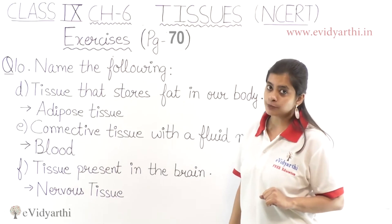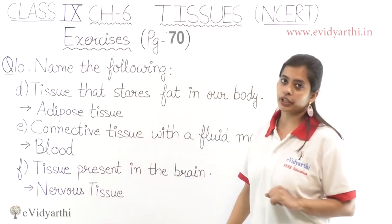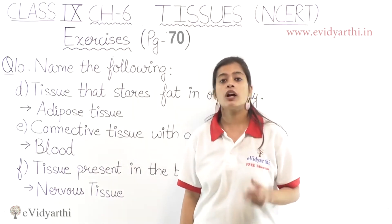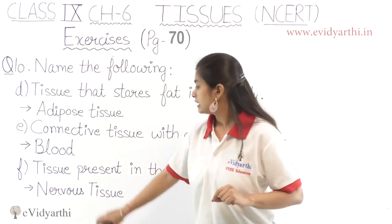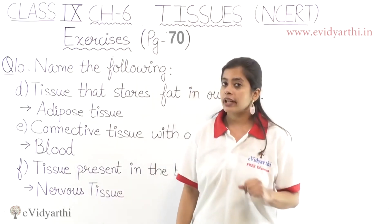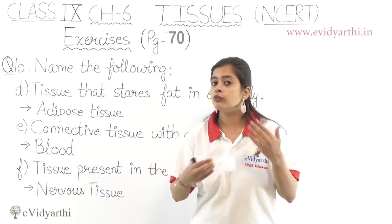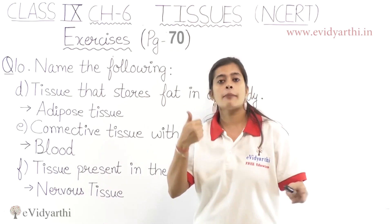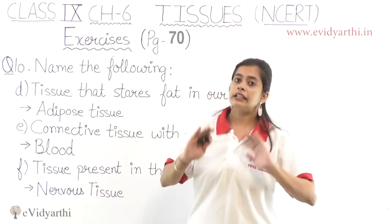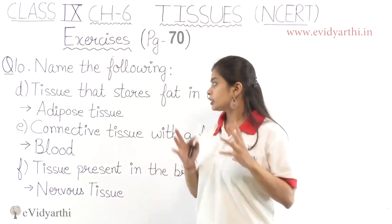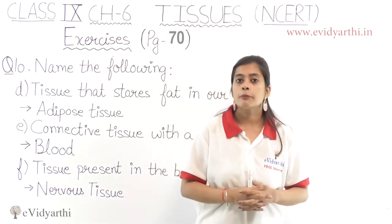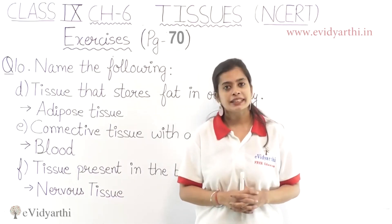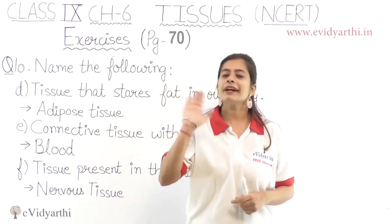Now moving on to the last part: which tissue is present in the brain? That is very simple — nervous tissue. Nervous tissue plus muscular tissue: these nerve impulses combine and carry messages through our body. So this is all about tissues. Stay tuned with us. Bye bye.